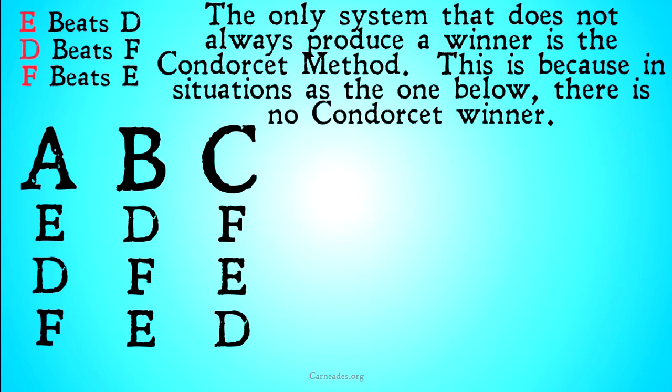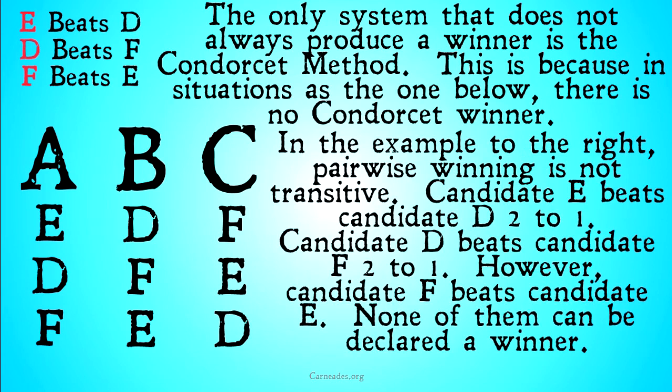Defeating someone is not transitive — pairwise winning is not transitive. Candidate E beats D 2 to 1, and D beats F 2 to 1. However, though you might think that should mean E beats F, in fact F beats E, so none of them can be declared a winner.